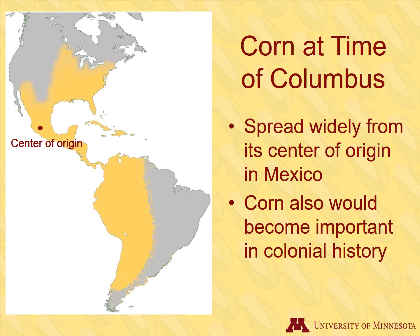By the time Columbus landed in the Americas in 1492, there were already hundreds of landraces of corn growing from southern Canada to south-central Chile. This map shows how far corn might have spread by the 1400s from its center of origin. Corn was important to Native Americans, and it would continue its importance in agriculture as Europeans colonized the New World.